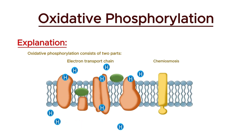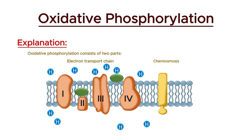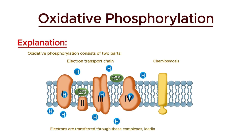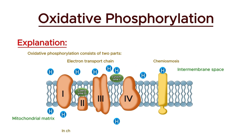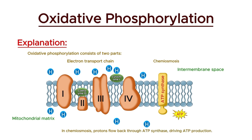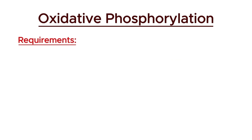The electron transport chain creates a proton gradient, and chemiosmosis uses this gradient to synthesize ATP. The electron transport chain consists of four main protein complexes and two mobile carriers — ubiquinone, also known as coenzyme Q, and cytochrome C. Electrons are transferred through these complexes, leading to the pumping of protons from the mitochondrial matrix into the intermembrane space, creating an electrochemical gradient. In chemiosmosis, protons flow back through ATP synthase, driving ATP production.